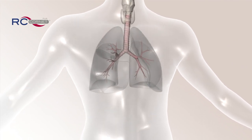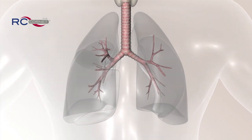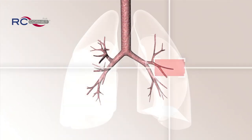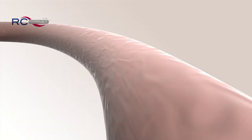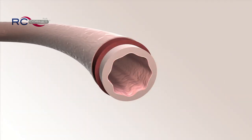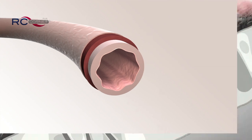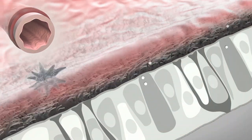The trachea, bronchial tubes, bronchioles, and alveoli form the lungs. In a healthy state, the airways are coated with a thin layer of mucus. This layer of mucus traps foreign bodies like a fly trap.